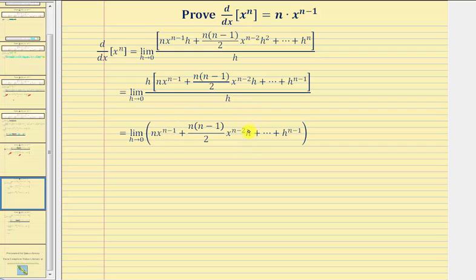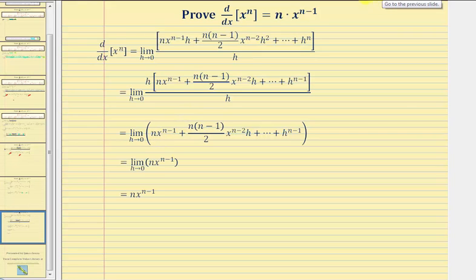Now if we look at these terms closely, notice all the terms contain at least one factor of h except the first term. Each term after the first has one more factor of h, until the last term has n minus one factors of h. Therefore, as h approaches zero, all the terms except the first term are going to approach zero, and therefore the limit is just going to be the first term: n times x raised to the power of n minus one.